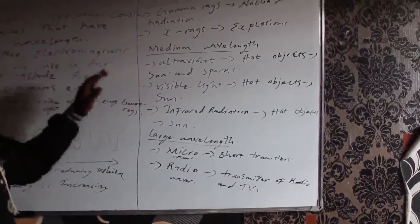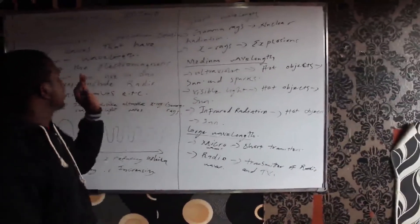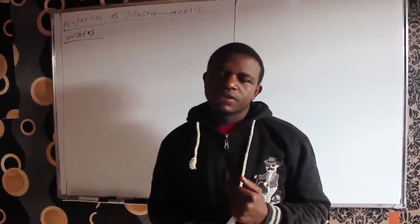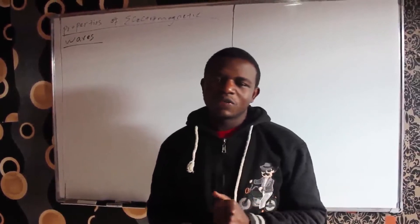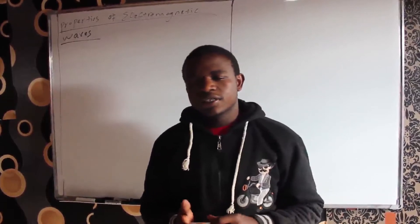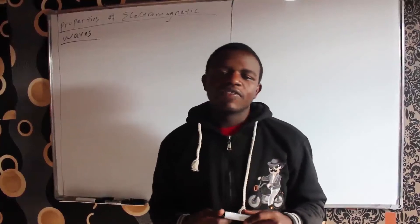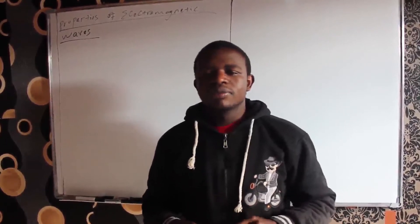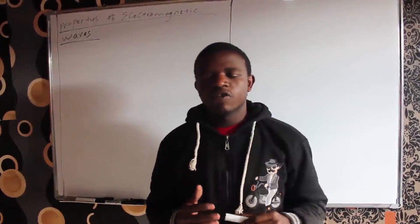The next thing we're going to talk about are the characteristics of electromagnetic waves. The first characteristic is that all electromagnetic waves are transverse waves. The second characteristic is that they are made up of pure energy. Another characteristic is that they travel at the speed of light, which is 3 × 10⁸ meters per second.